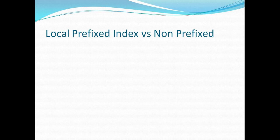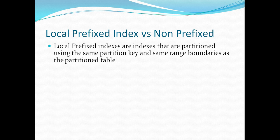When we talk about local partition indexes, there are two types: local prefix index and non-prefix index. Local prefix indexes are indexes that are partitioned using the same partition key and have the same range boundary. This range boundary concept remains the same for non-prefix indexes as well, but there is a specific requirement for prefix indexes: the key used to create the local prefix index must be the same as the partition key.